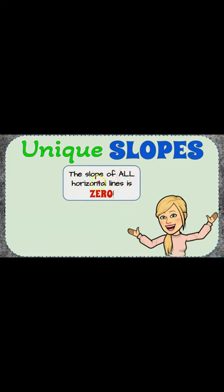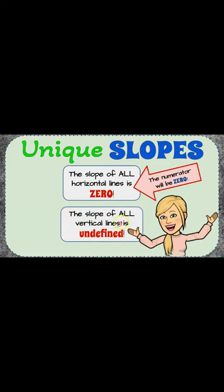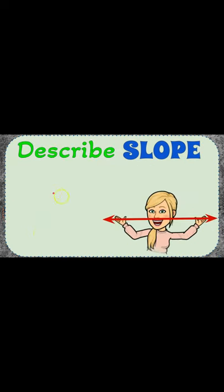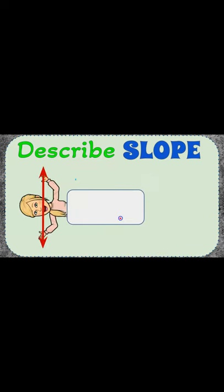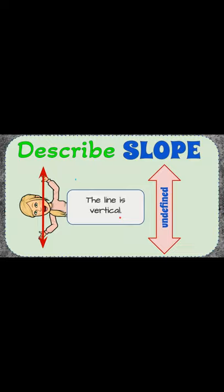Now we have some unique slopes. The slope of all horizontal lines is zero — the numerator will be zero if you're using the slope formula. And the slope of all vertical lines is undefined, where our denominator will be zero. So describing the slope of a horizontal line, you will have zero. Describing the slope of a vertical line, it will be undefined.